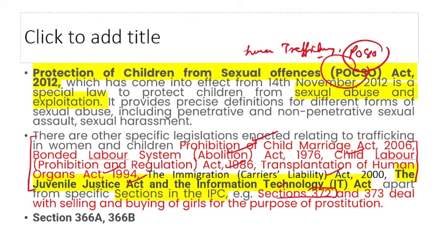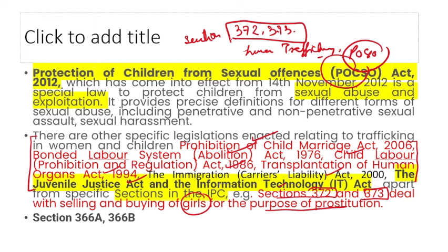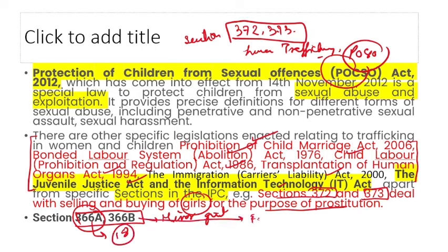IPC Sections 372 and 373 deal with selling and buying of girls for the purpose of prostitution. Section 366A applies to minor girls (below 18 years) being trafficked within the country for sexual exploitation. Section 366B applies to trafficking from foreign countries. Punishment for both 366A and 366B is 10 years plus fine.